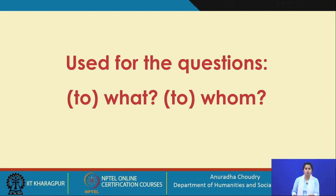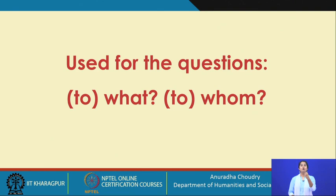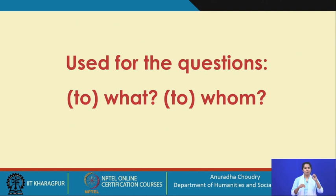There is also a 'to whom' or 'to what' usage because some verbs like vadami meaning 'to speak' take an object in the accusative. So purushaha asti, purusham vadami — I speak to the man. Chhatraha asti, chhatram vadami. Kam vadami? Whom do I speak to? Chhatram vadami. So you understand why 'to what' or 'to whom' is given there.